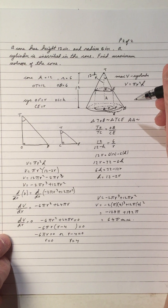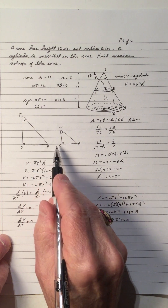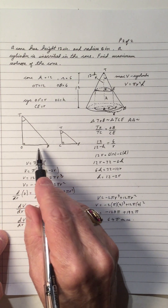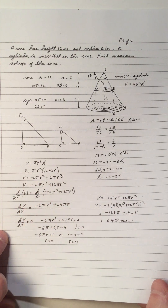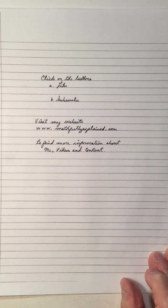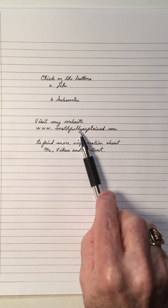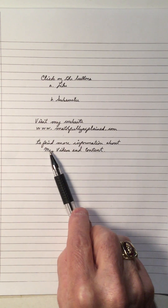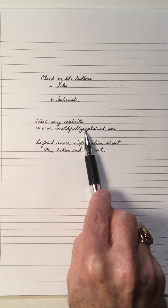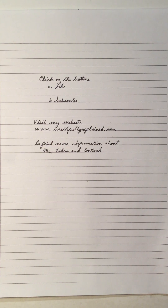So that's the maximum word problem done. I chose this problem because the concept of similar triangles is very important in calculus, particularly in what we call related rates. That brings us to the end. If you liked my video, click the like button, click the subscribe button, and visit my math website at www.mathfullyexplained.com for more information. Thank you for viewing my video — hope it helped you. Bye bye.